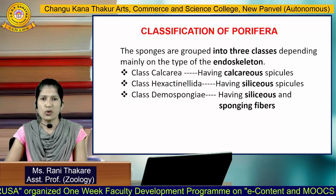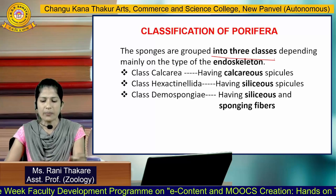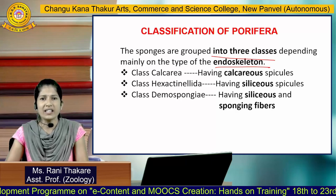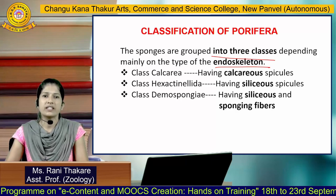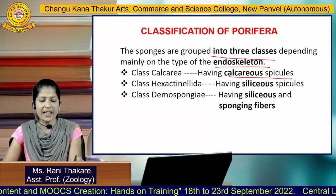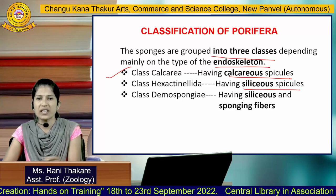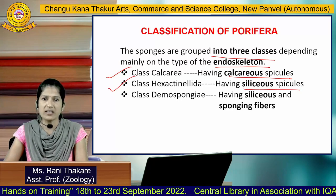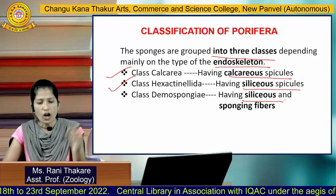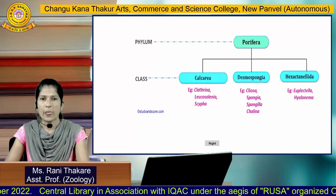Porifera are grouped into three different classes depending upon their endoskeleton — that is, how their internal body skeleton is made up. When the animal's body is made up of calcareous spicules, it is placed under class Calcarea. When the body is made up of siliceous spicules, it is placed under class Hexactinellida. When the body is made up of siliceous spicules along with spongin fibers, the animal is placed under class Demospongiae.